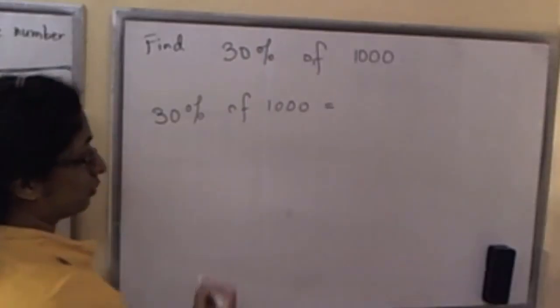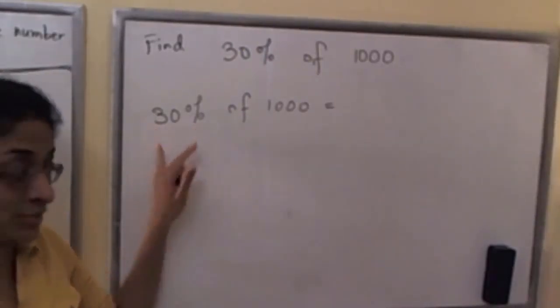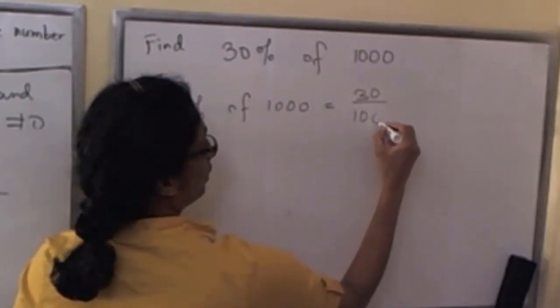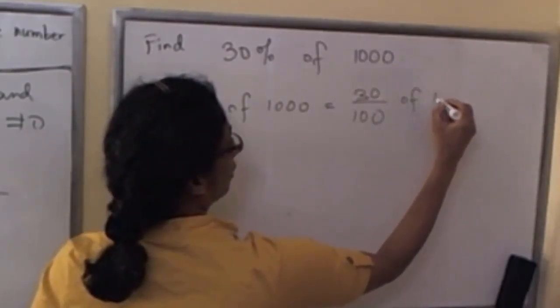So right away what we do is we rewrite 30% as a fraction: 30 over 100 of 1000.